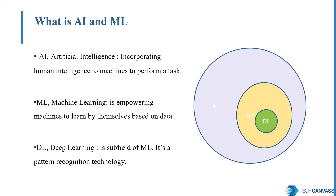Let's understand what AI is and the terms around it. AI stands for artificial intelligence — it means adding human intelligence to a machine. The best example to understand AI is Amazon Echo, where we ask a question in the form of voice. It understands the voice message, converts it into machine language, and finally delivers the output in voice.